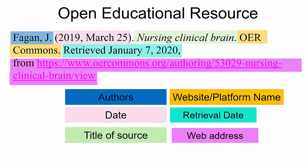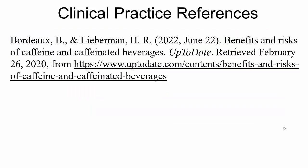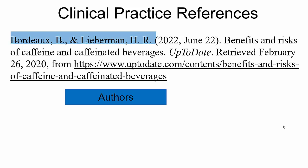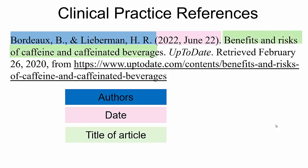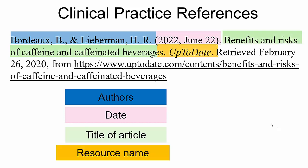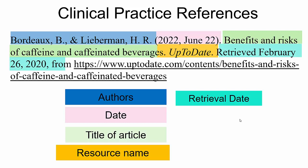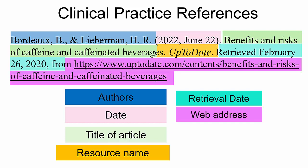You must do this with anything that is updated frequently, like this clinical practice reference from Up-to-Date. The author is in the same format, followed by the date in the same format, followed by the title. Up-to-Date works kind of like an encyclopedia, so the title is in capitals and italics. Next is the retrieval date — the date that you examined it — followed by the word 'from' and then the web address as a live link.